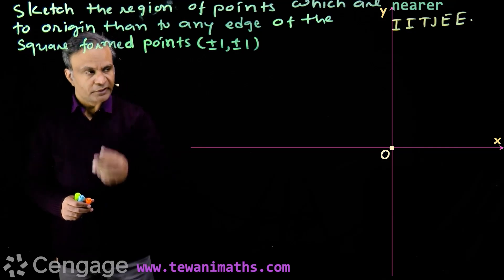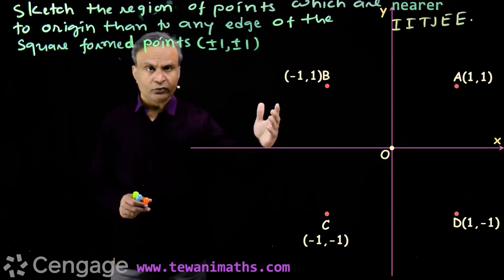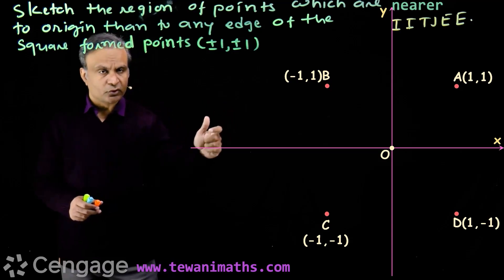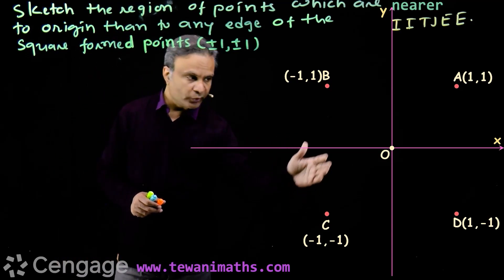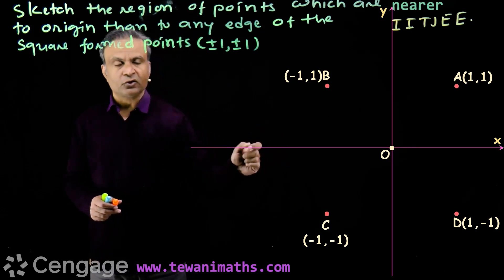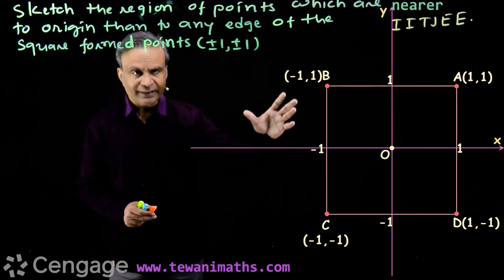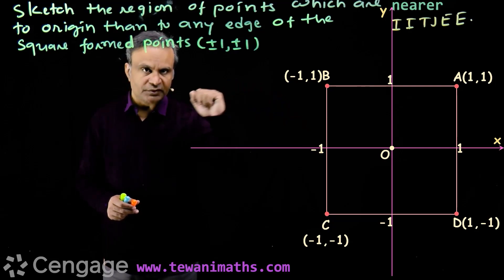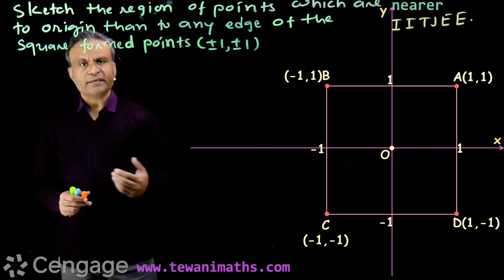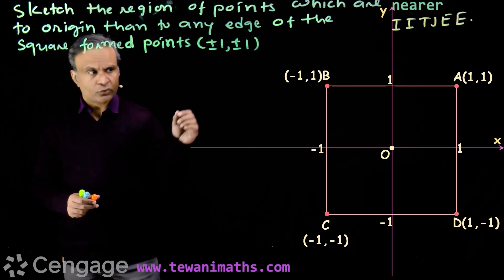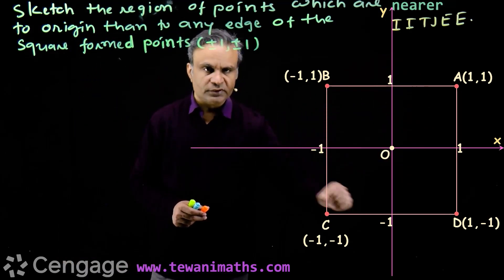As far as points on the coordinate plane, we have point A having coordinates (1, 1), point B having coordinates (-1, 1), point C having coordinates (-1, -1), and point D having coordinates (1, -1). With these four points we get square ABCD.